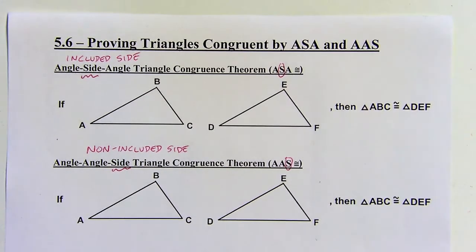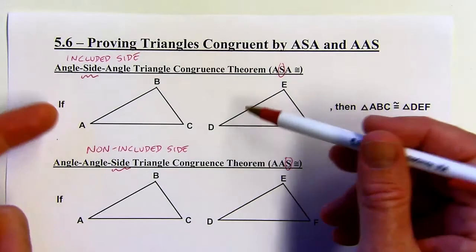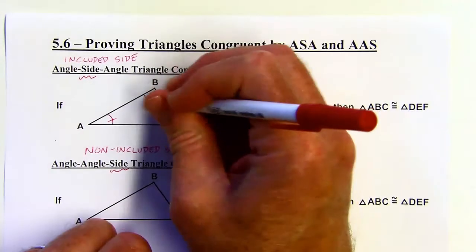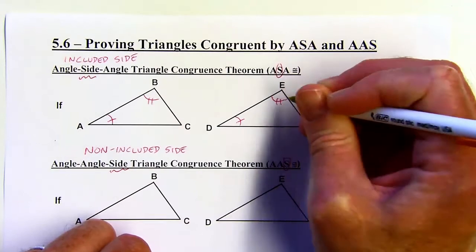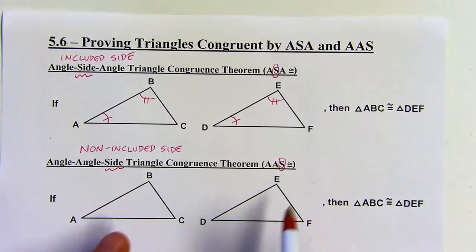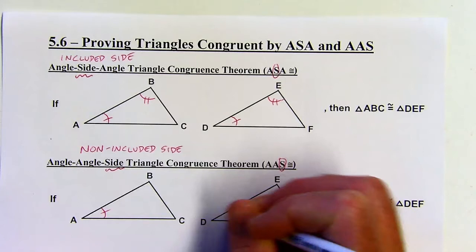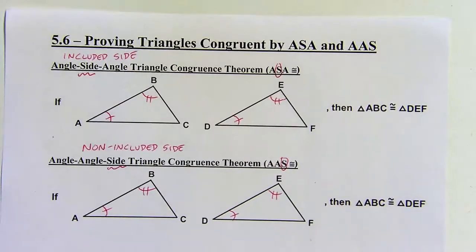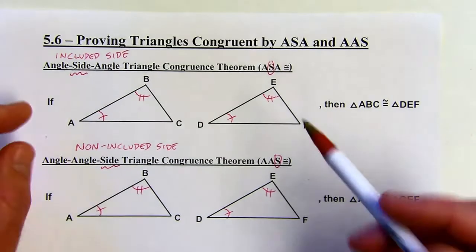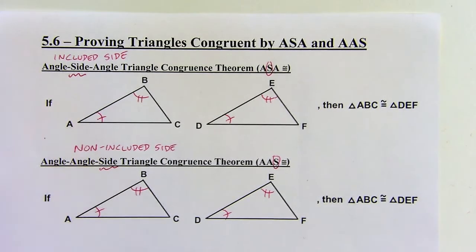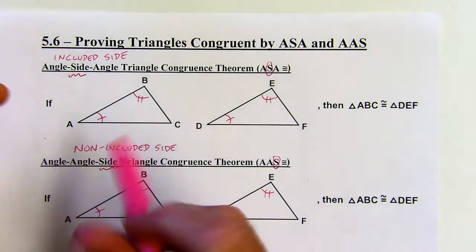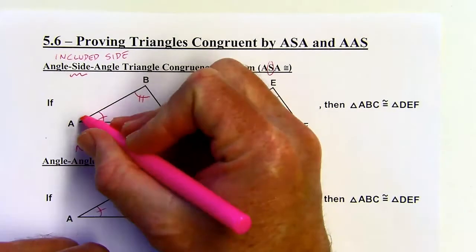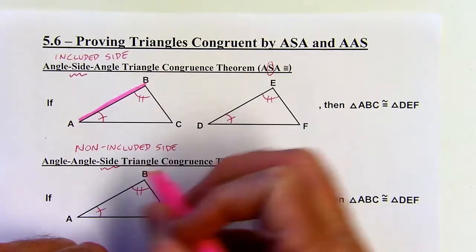Let's talk about what that means. We've got two pairs of angles that are congruent in these two triangles. We need to figure out what our included side is going to be — that's the side that's part of both of these angles. It's going to be touching both angle A and B, so it connects A and B. That would be my included side.